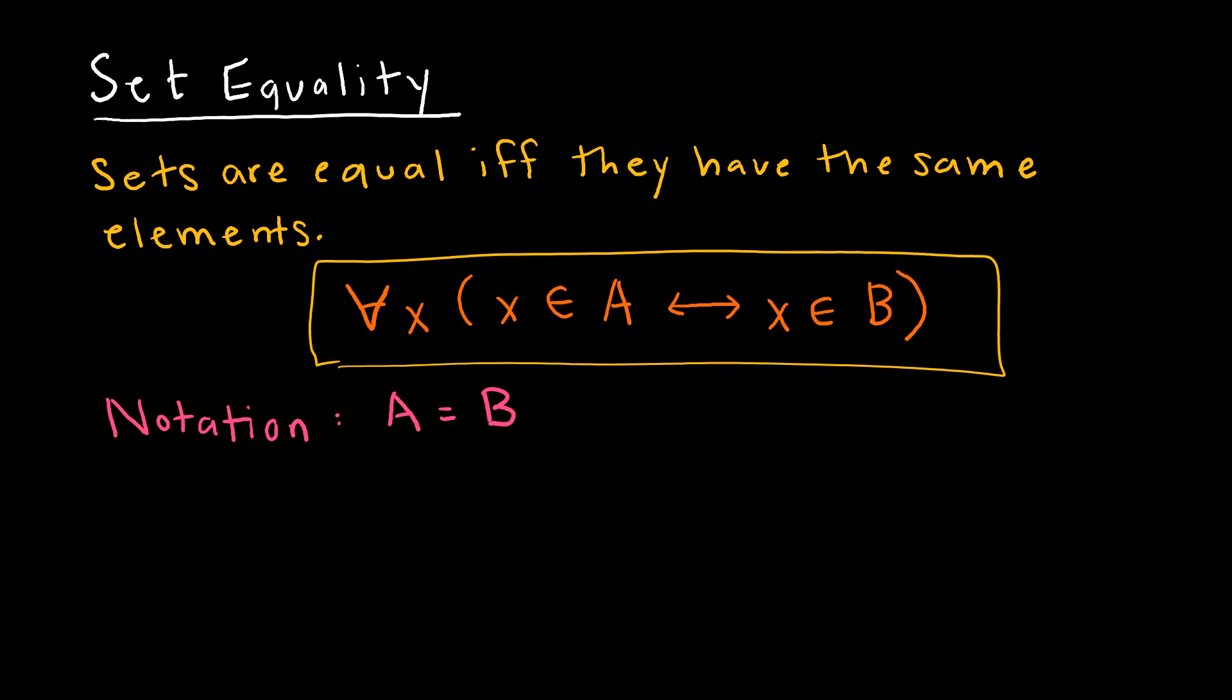And we would just write that A equals B. So let's say I have set A is 0, 1, 1, 3, 4, 4, and set B is 0, 1, 3, 4. These are equal sets. So I can say here that set A is equal to set B, because even though I have a duplicate of 1 and a duplicate of 4, there are no elements that are in one set that are not in the other set. And again, it doesn't matter the order.